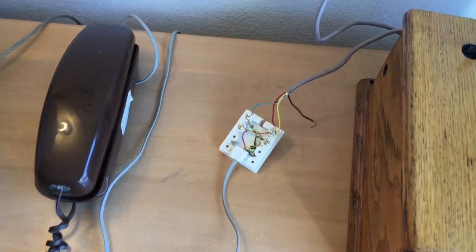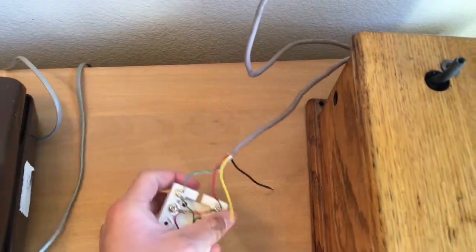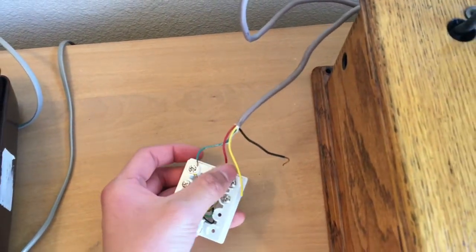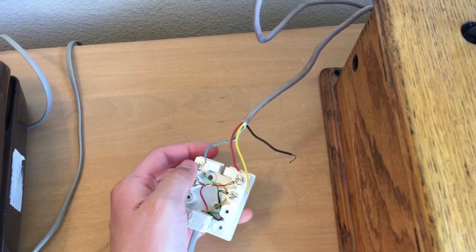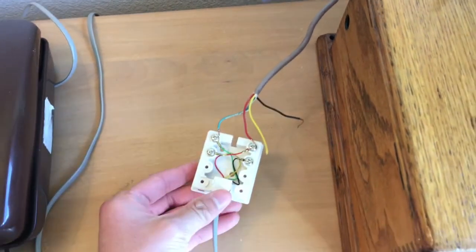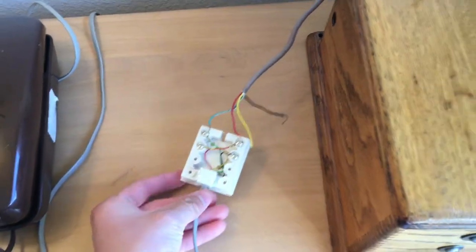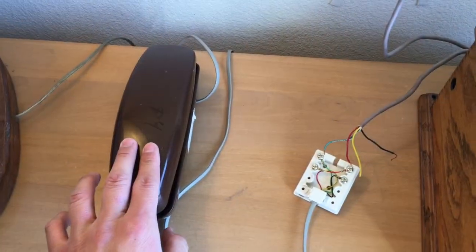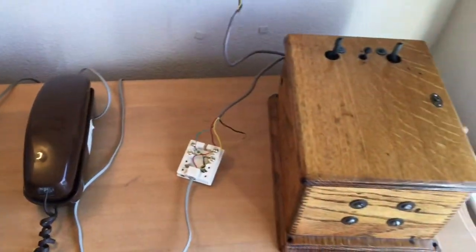As you can see how I connect the magneto to the phone, I have it set up to where the red for ring and green for tip wires terminate on a surface mount jack, which then connect to the RJ11 cord which connects to the trim line phone. Let's do a ringing demonstration.